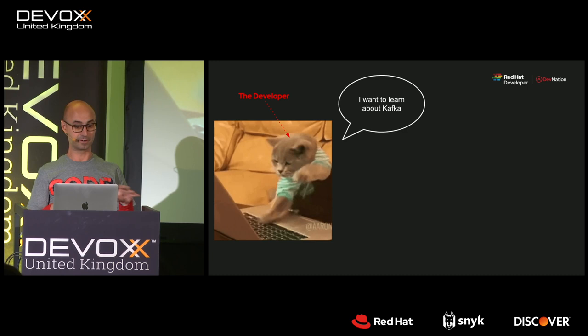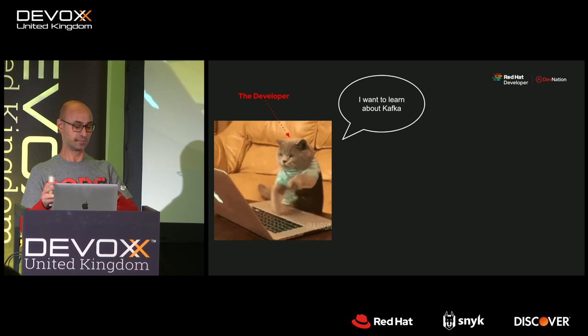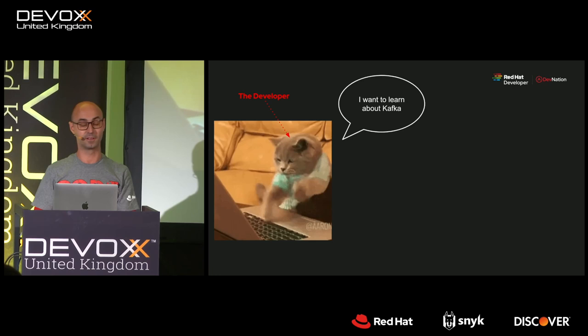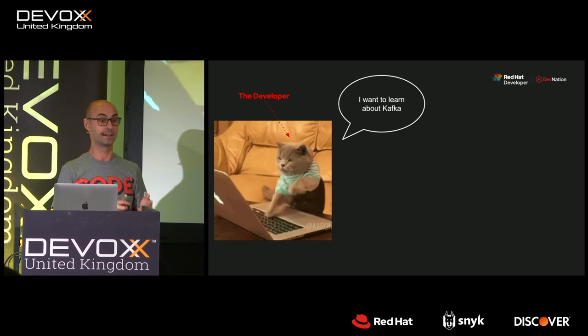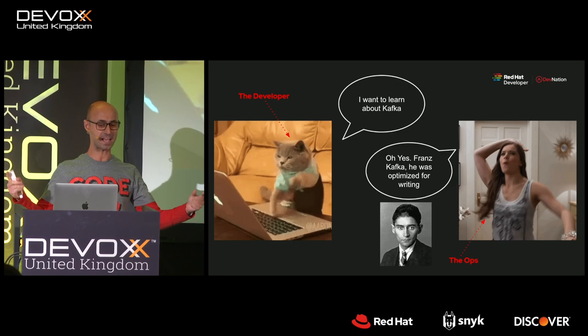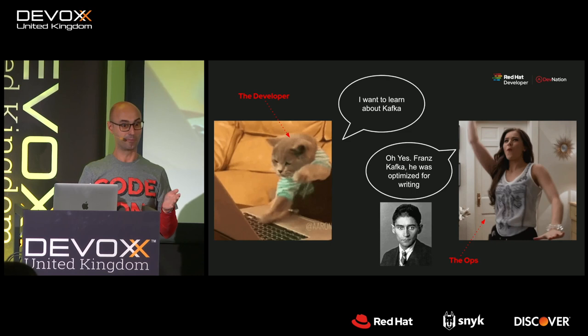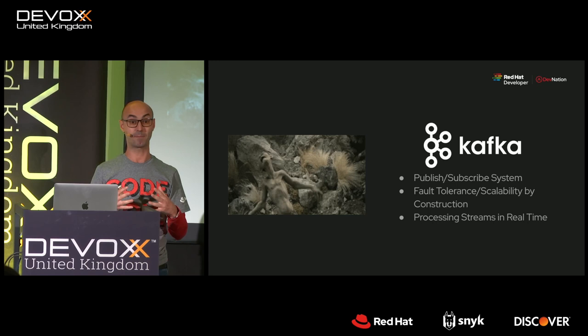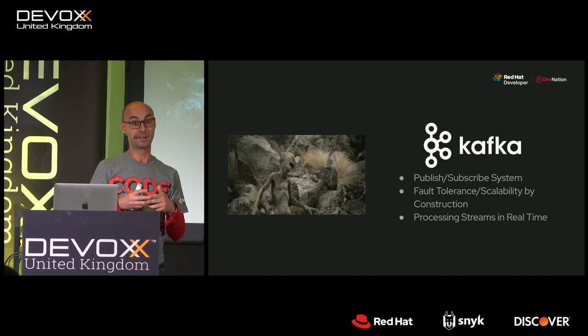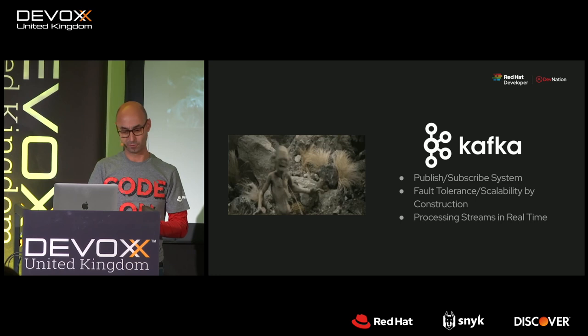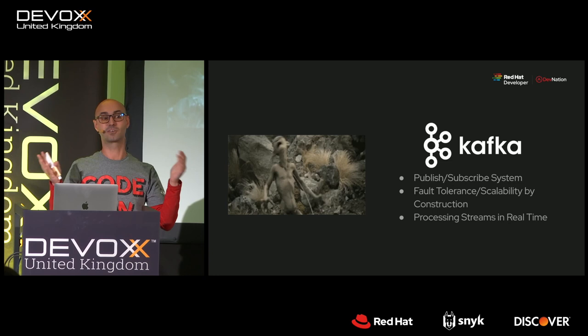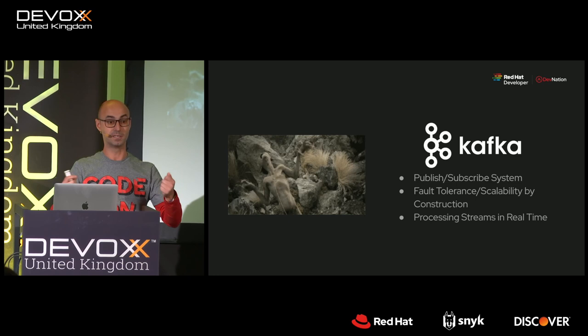There is a developer who loves to learn new things. He was trying new things, heard something about Kafka, doing some demos, and then went to talk with the operations team saying: 'I've been playing with Kafka and I want to use it in production.' The ops team confused it with Franz Kafka, the writer. The developer clarified: Apache Kafka is another system — a publish-subscribe system like JMS, ActiveMQ, or RabbitMQ.